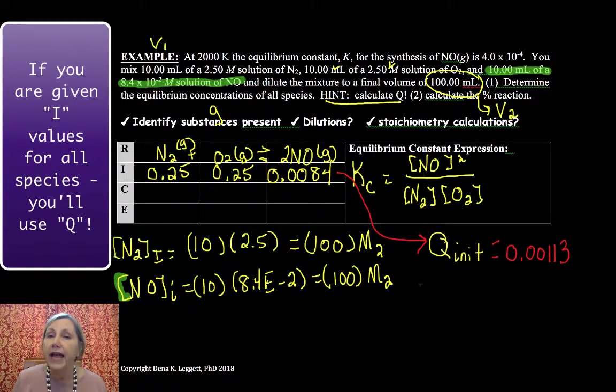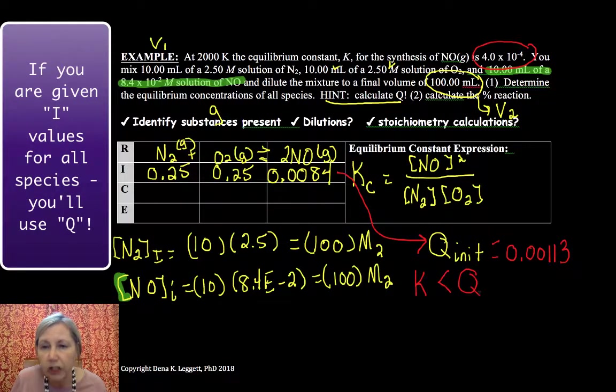Now what we have to do is compare Q to K. Now K for the synthesis is 4 times 10 to the minus 4th. So in our case, K is less than Q. In other words, Q is too big. I have too much product, and the only way to get rid of it is to consume product and form reactant.